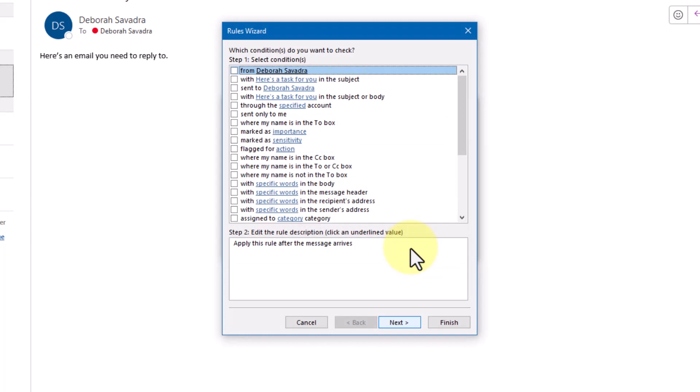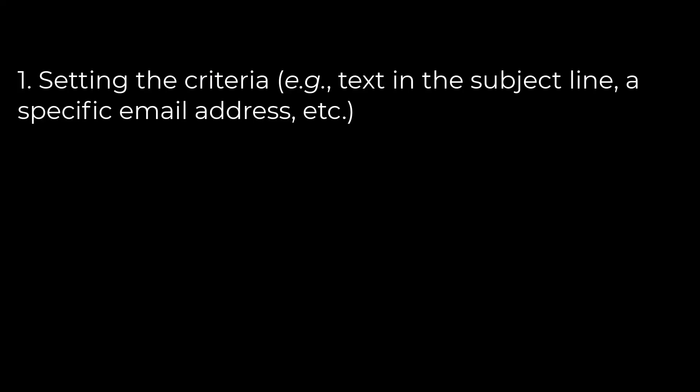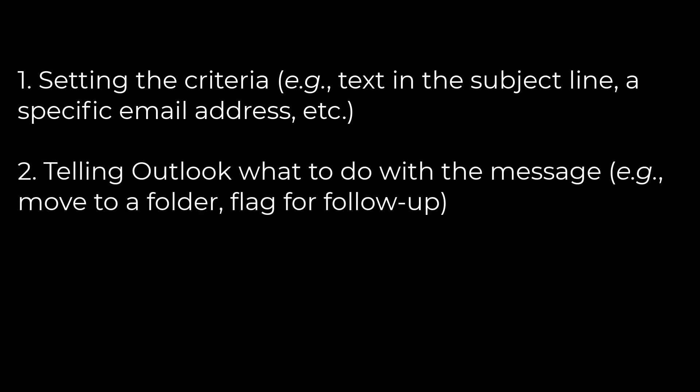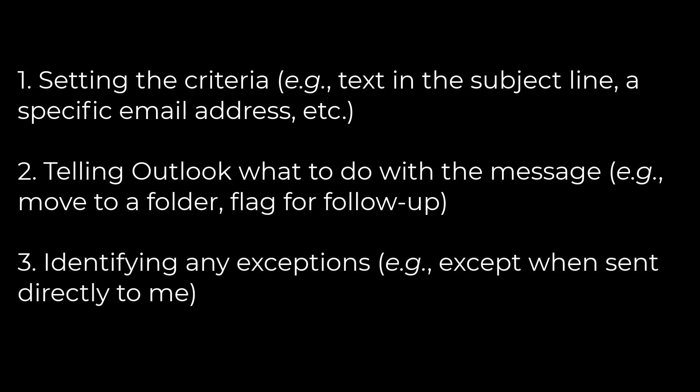The Rules Wizard takes you through three steps. One, setting the criteria that Outlook needs to apply to each incoming email. Two, instructing Outlook what to do with messages that meet the criteria — i.e. move to a folder, flag the message for follow-up, play a sound, display an alert, etc. And three, identifying any exceptions, i.e. except when sent directly to me.